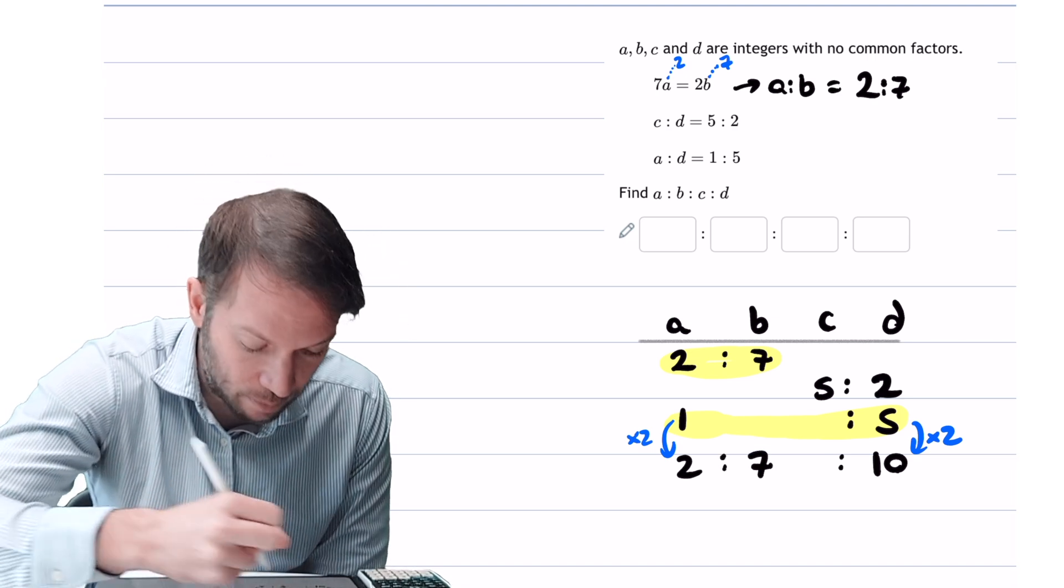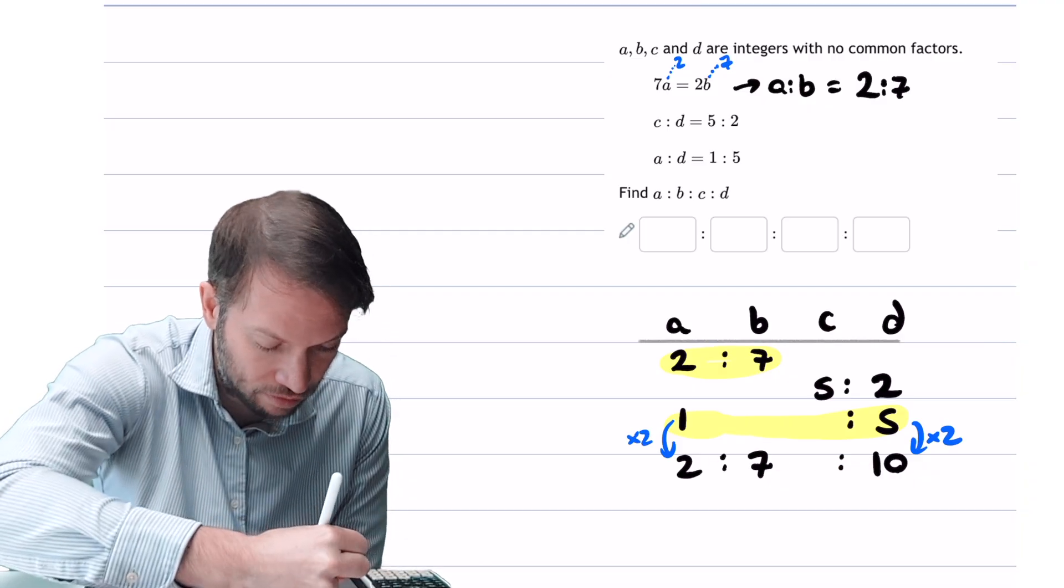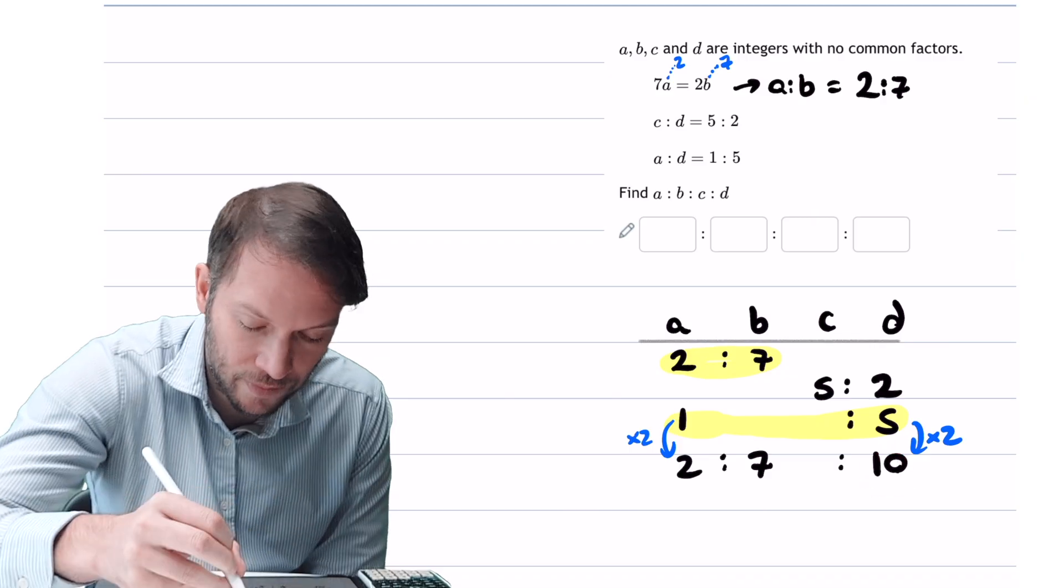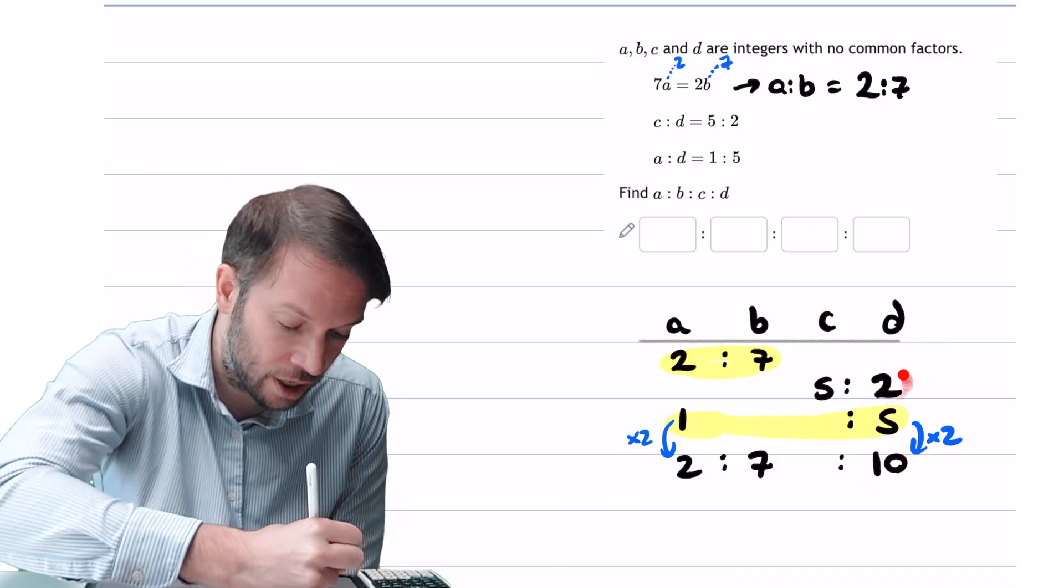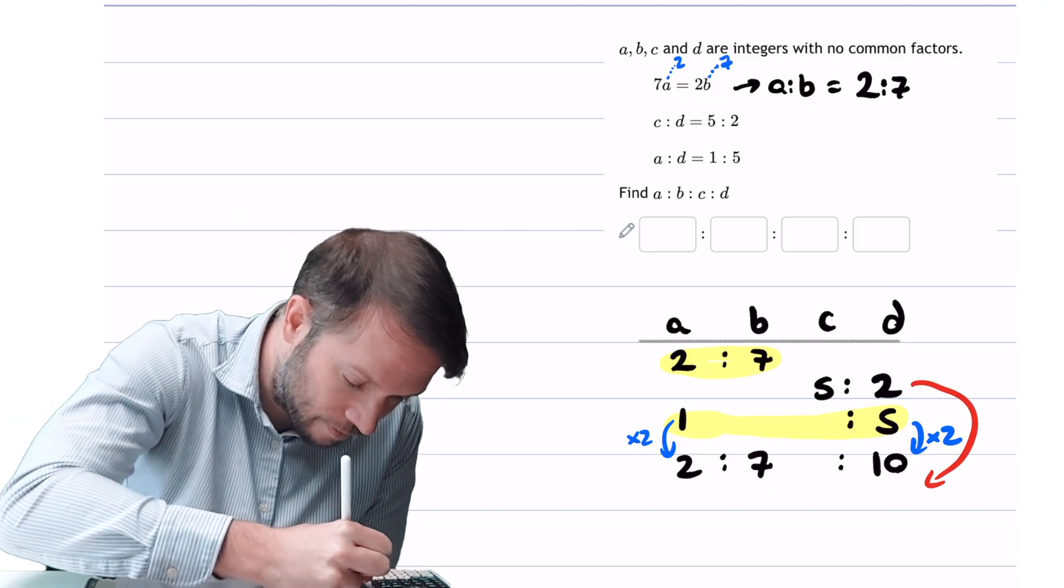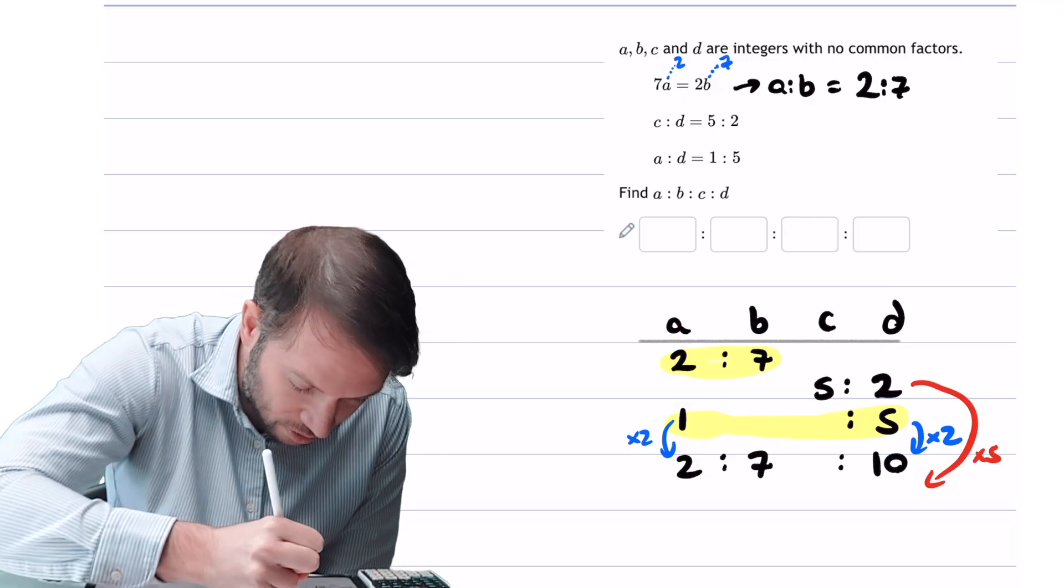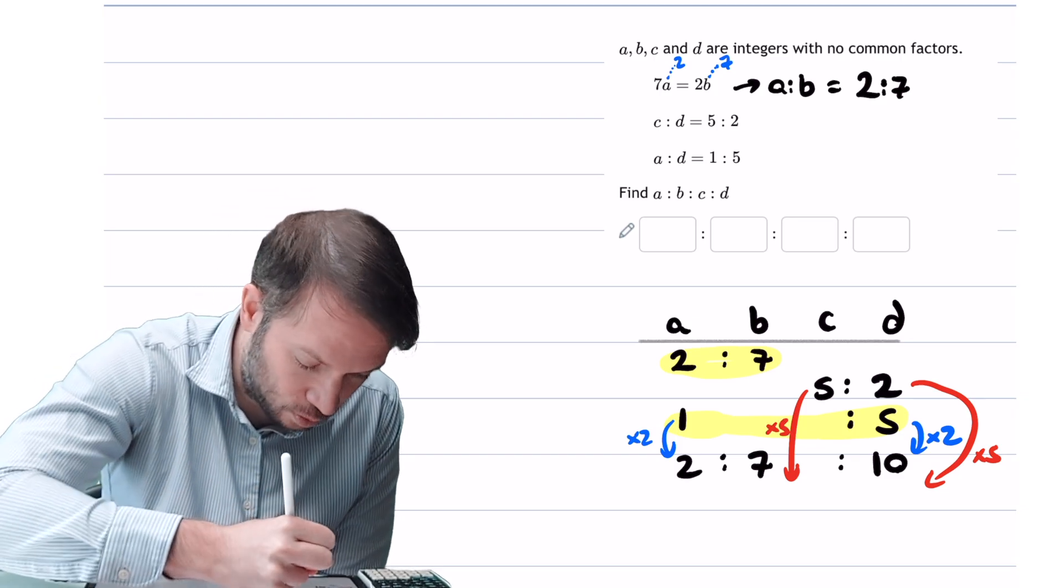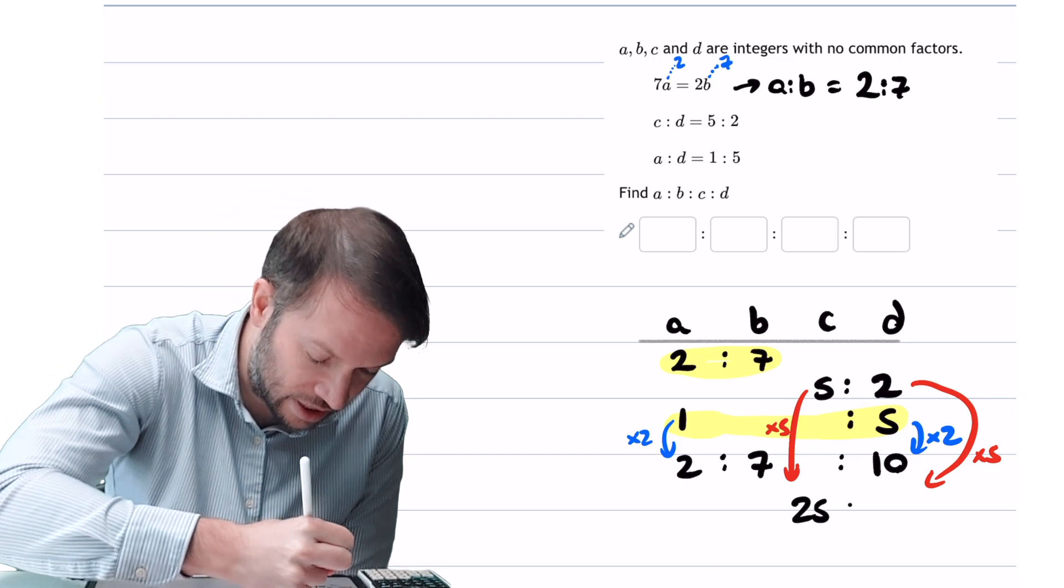And now we want to combine this row here with this row here. Can you see we have the d in common? You've got the 2 and the 10 here. Now this 2, if you multiplied it by 5, you would make it equal to 10. So if you multiply this by 5, and you also multiply this by 5, that's going to give us 25 to 10.